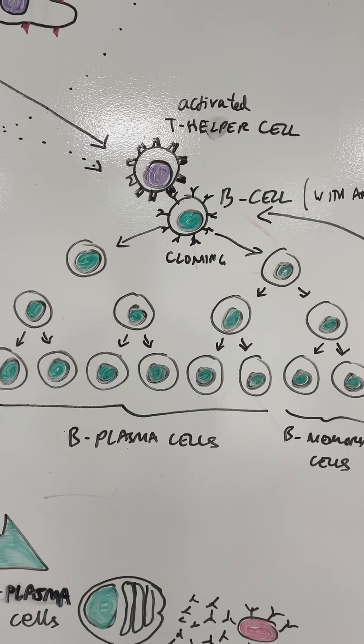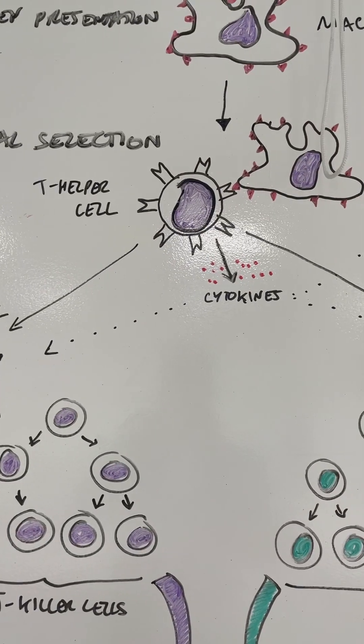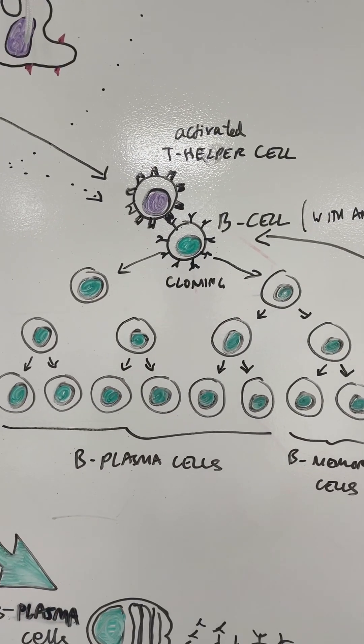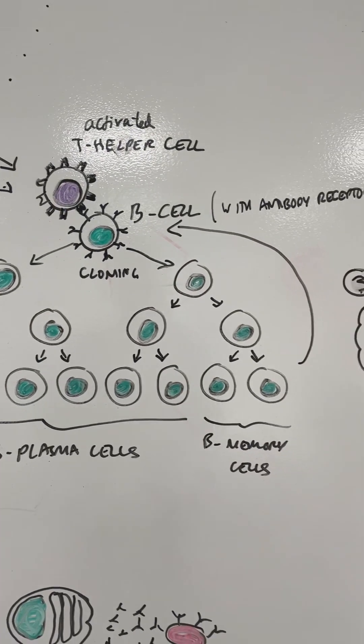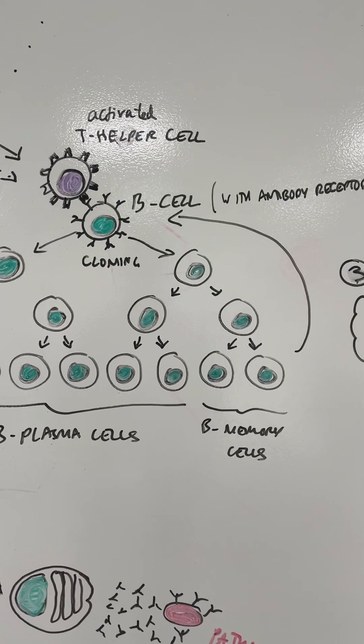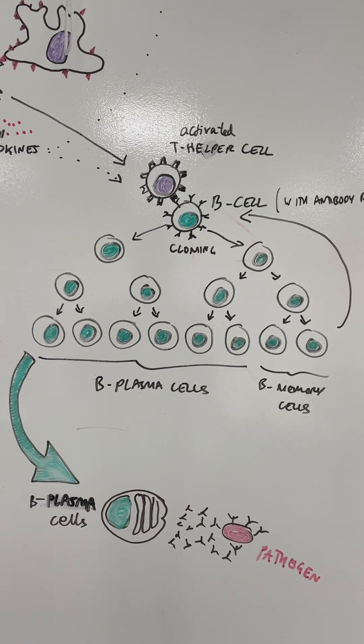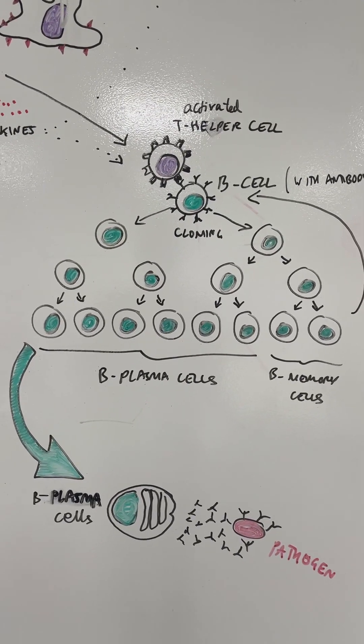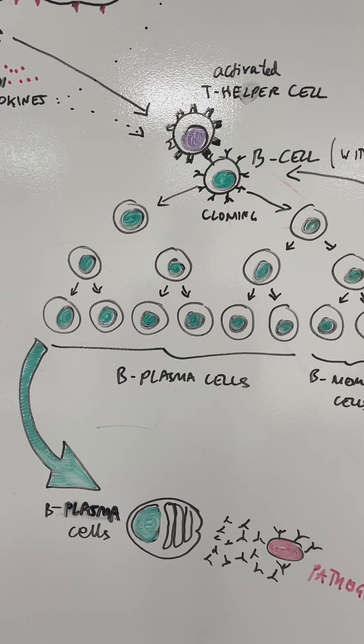Those activated T helper cells, which have been formed from the clonal selection process, once we've got that right T helper cell, it can then find a corresponding B cell which has the correct antibody receptors on its surface to match up. Once that process has happened - clonal selection - we can then do clonal expansion and we get a huge amount of mitosis happening to make lots of B plasma cells.